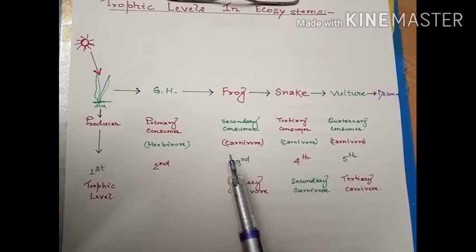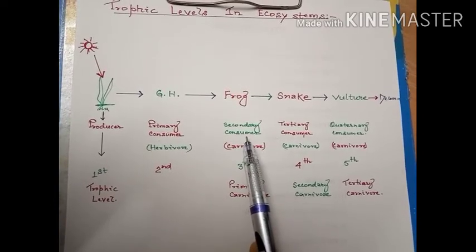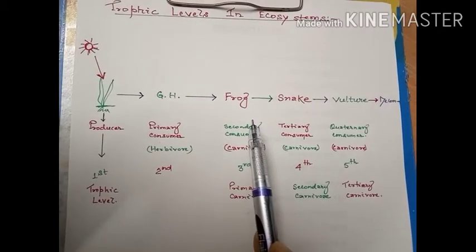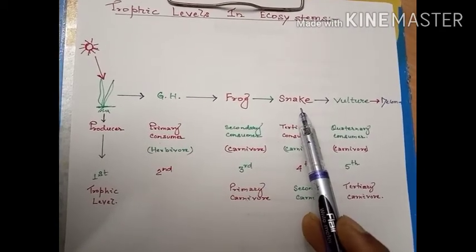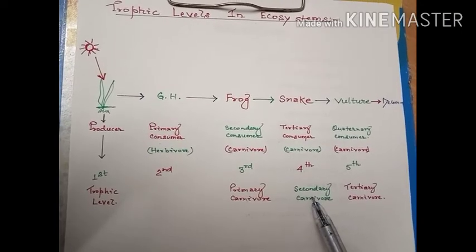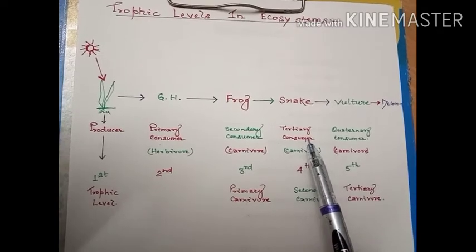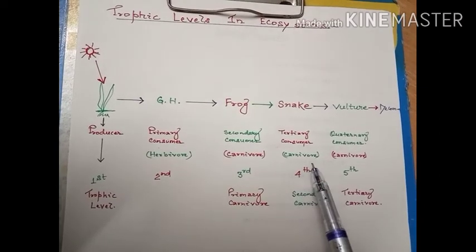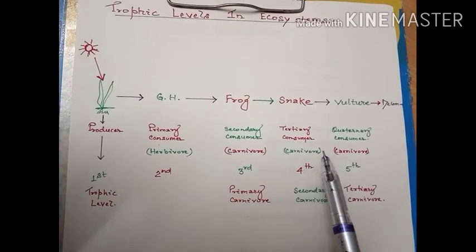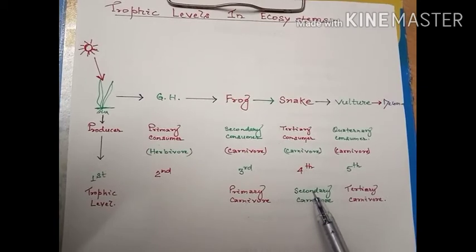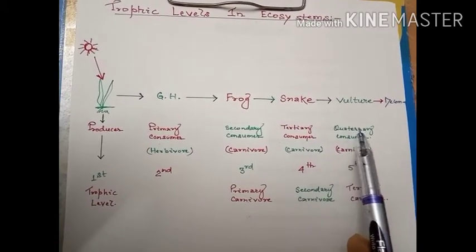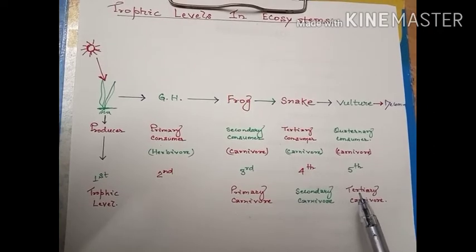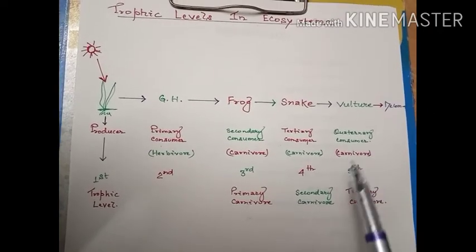The secondary consumers or primary carnivores are also not left uneaten. They are preyed upon by the secondary carnivores, or tertiary consumers, and they form the fourth trophic level within the ecosystem. Similarly, the tertiary consumers or secondary carnivores are also consumed by the quaternary consumers, or tertiary carnivores. Additional trophic levels may also occur in the ecosystem, formed by the parasites.